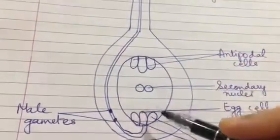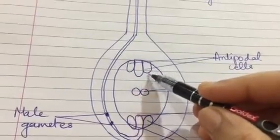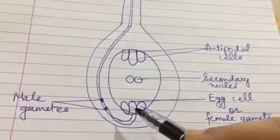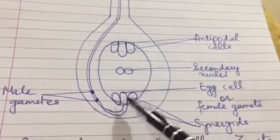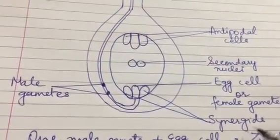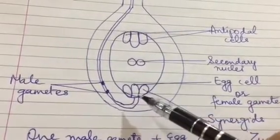Ovary has this ovule. There are three cells on the upper side known as antipodal cells. Three cells on the lower side, out of which the middle one is known as egg cell or female gamete. These two cells are known as synergids. These are the nurse cells which protect the egg cell till the male gametes enter.